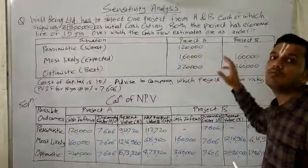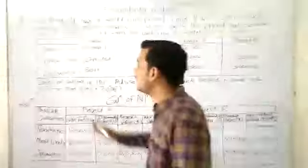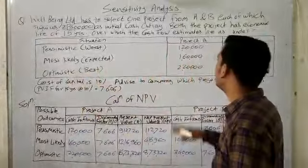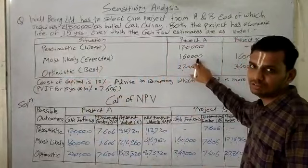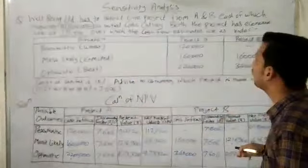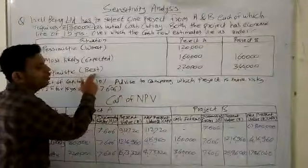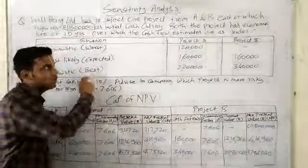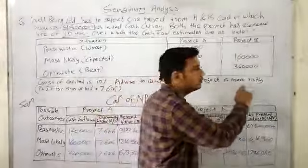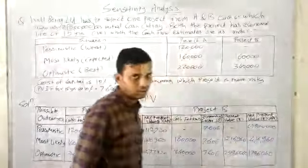Whereas Project B would not have any cash inflows. In the most likely or expected situation, we have cash inflow of 1,60,000 for both Project A and Project B. In the optimistic or best situation, we have cash inflow of 2,20,000 and 3,40,000.